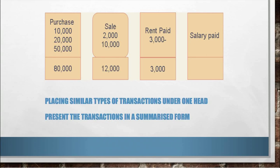Now it will be easy for us to calculate the total amount of purchase for a particular period — whether 30 days, 50 days, 3 months, or 1 year. The total amount of purchase in our example is 80,000 for 6 days, and we can answer spontaneously. The total amount of sale is 12,000. In this way, we place all transactions of similar nature in a particular place, and that is known as an account.